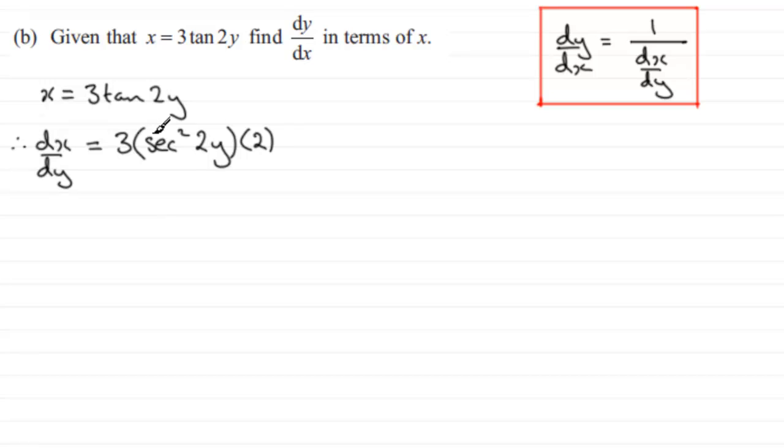So we've got this, all we need to do is tidy it up and that's going to give us 3 times 2 is 6, so 6 sec squared 2y.